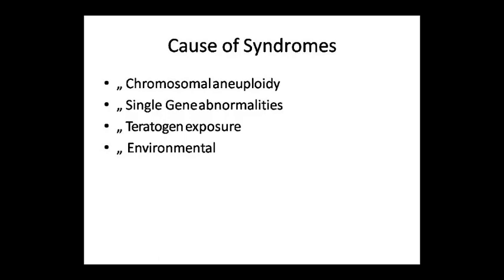Chromosomal aneuploidy can be seen in the whole chromosome, or it can be seen in a single gene. If there is an abnormality, there can also be teratogen exposure. I have told you about teratogenesis in pharmacology. Teratogenesis refers to drugs taken during pregnancy that cross the placental barrier and can cause structural abnormalities.